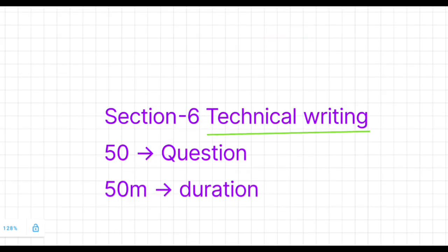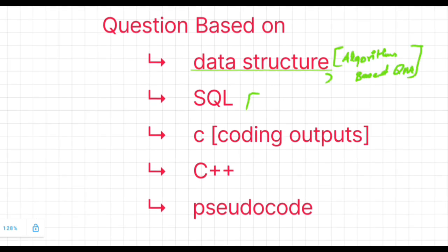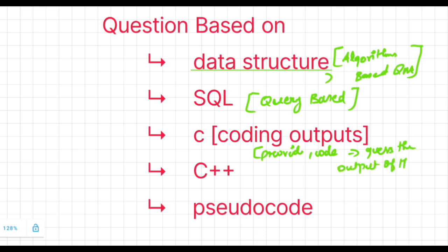Let us discuss Section 6, which is Technical Writing — an important part because it has high mark weightage. There will be 50 questions and the duration for this section is 50 minutes. The questions range from easy to medium level and are based on data structures, algorithms, and SQL queries. They will provide a query and ask which is correct. They will also provide coding questions in C, C++, and Java, and you need to guess the output.